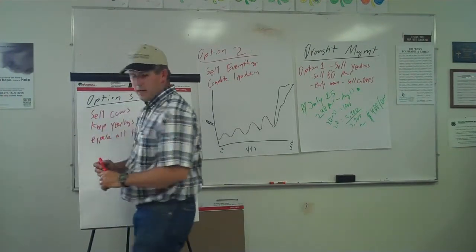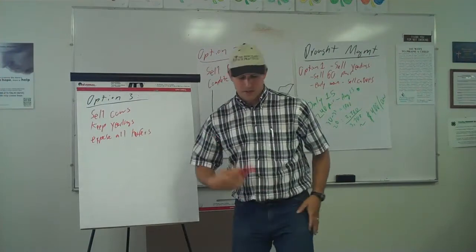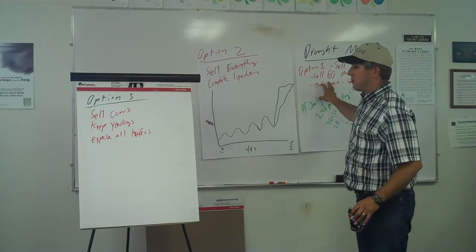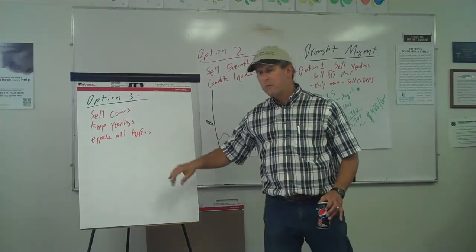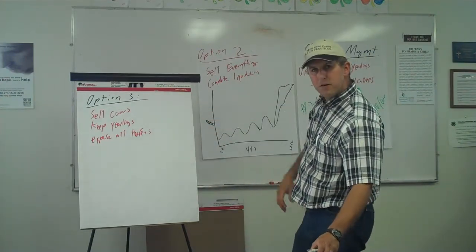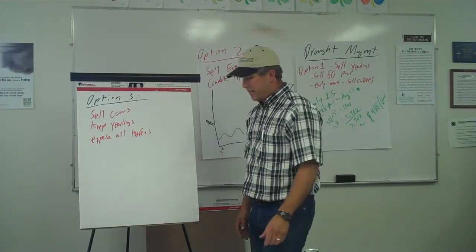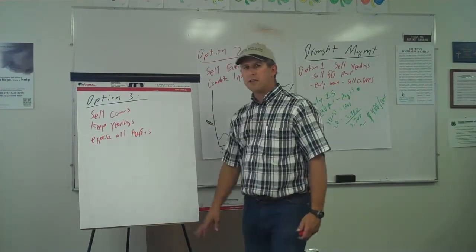So, perhaps if you were to consider this option, you would take maybe a little bit combination between option number one and option number three. Perhaps you wouldn't sell all the cows, maybe even keep the younger cows, the two-year-olds, the three-year-olds, whatever they might be, as well as these yearling heifers.